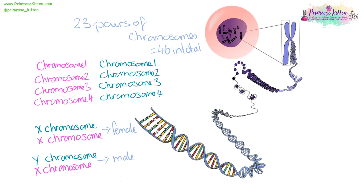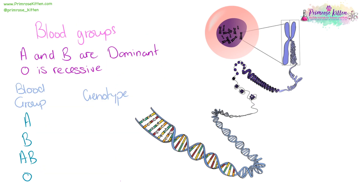If you have inherited two X chromosomes, you're going to be genetically female. If you have inherited an X and a Y chromosome, you're going to be genetically male. Genetics will also determine your blood group, and in blood groups, A and B are both dominant, whereas O is recessive.